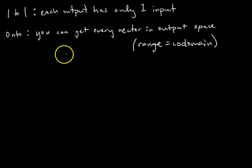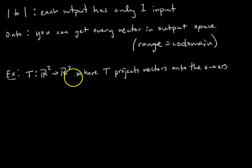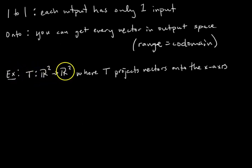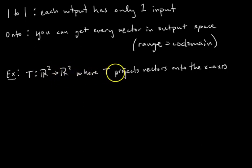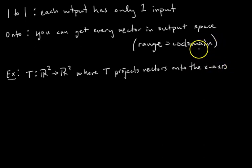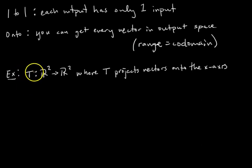Let's jump into our first example. We have transformation T that takes vectors from R2 to R2, so the domain is R2 and the co-domain is also R2. The transformation T projects vectors onto the x-axis. We want to determine: is this transformation one-to-one, and is it onto?